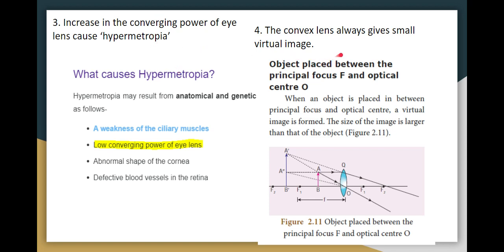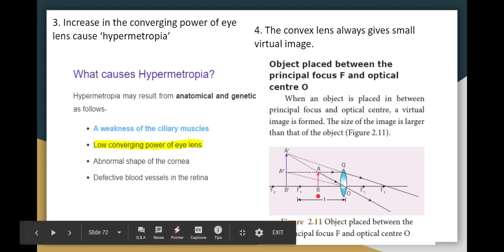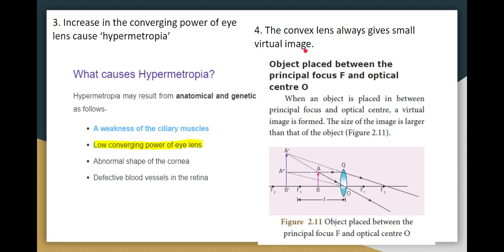True or False: a convex lens always gives a small virtual image. A convex lens can form different types of images based on object position. When the object is between F and the lens, it gives a virtual, magnified image — not always a small one. So this statement is FALSE.